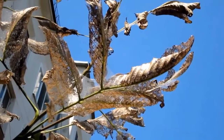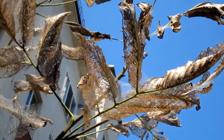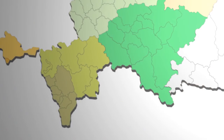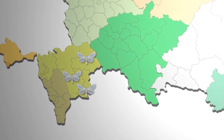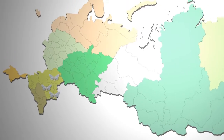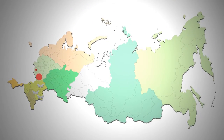Отдельные, пока неустойчивые очаги зарегистрированы в Поволжье — Волгоградской, Астраханской областях и Республике Калмыкия. В аномально тёплые годы очаги могут появляться в Воронежской, Курской областях и в Приморье.